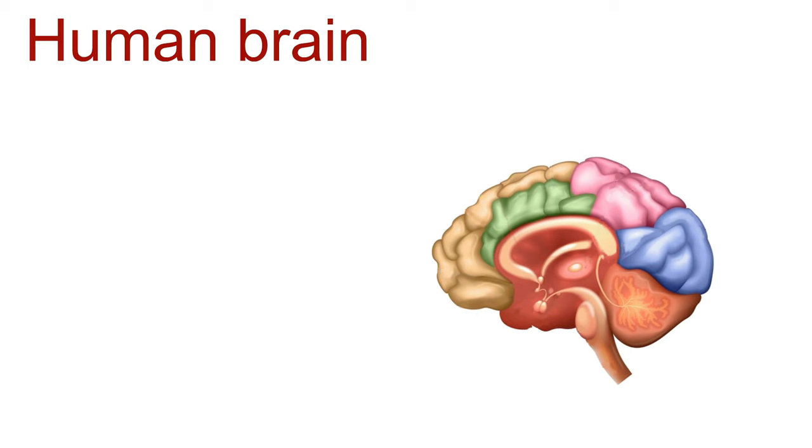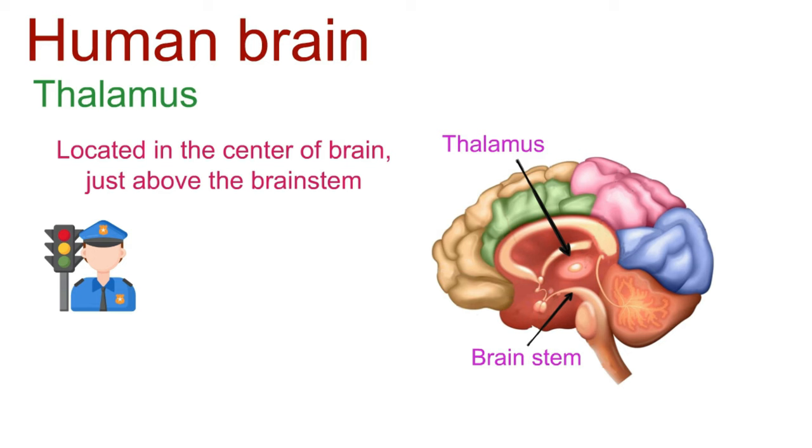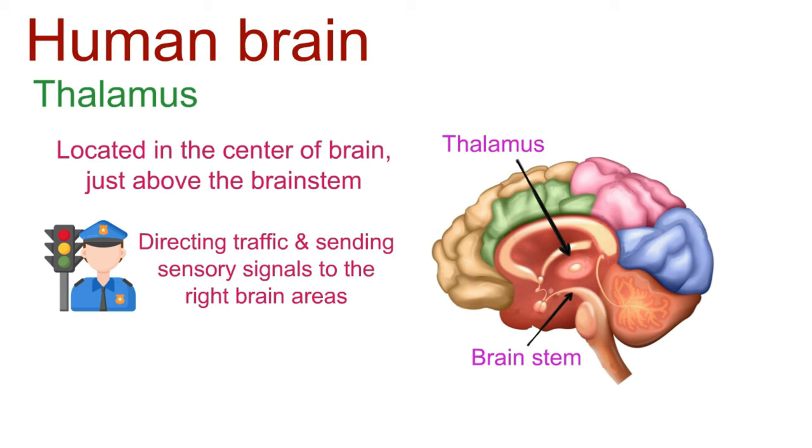The next stop on our VIP tour is the thalamus, hanging out in the center just above the brain stem. This is like the traffic cop for sensory signals, directing traffic and sending sensory signals to the right brain areas. It also acts as your brain's alarm clock, helping you stay alert and awake.